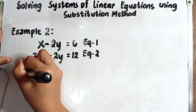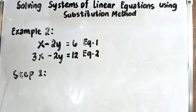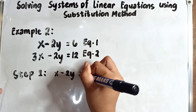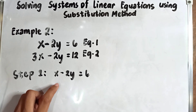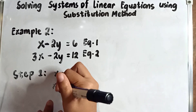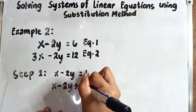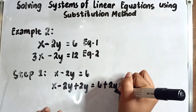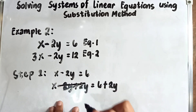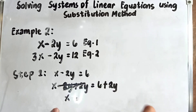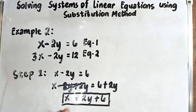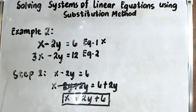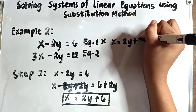Step 1 is to solve for x in x minus 2y equals 6. To isolate x, we add 2y to both sides: x minus 2y plus 2y equals 6 plus 2y. The negative 2y and positive 2y cancel out, leaving x is equal to 2y plus 6. This is now the value of x, and this becomes our new equation 1.